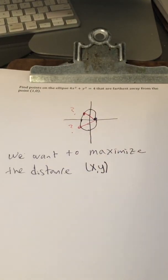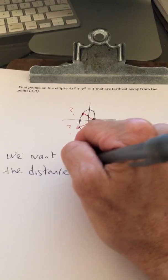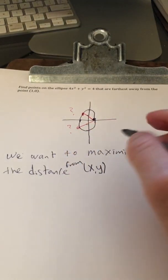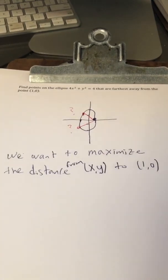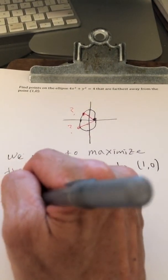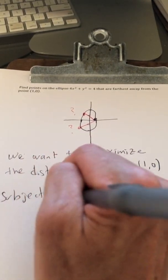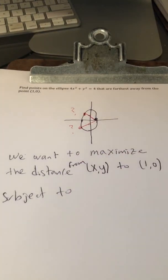We want to maximize the distance from the ordered pair (x, y) to the ordered pair (1, 0), subject to a constraint.